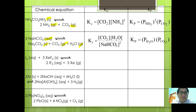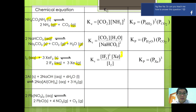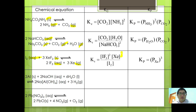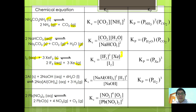For I2(aq) + 3H2(g) ⇌ 2HI(aq) + 3Z(g) (approximately), Kc = [HI]² · [Z]³ over [I2], whereas Kp is only the partial pressure of Z cubed. For 2Al + 2NaOH + 6H2O → 2NaAl(OH)4 + 3H2, Kc = [NaAl(OH)4]² · [H2]³ over [NaOH]², while Kp = P_H2³. For the final example, Kc = [NO2]⁴ · [O2] over [Pb(NO3)2]², and Kp = P_NO2⁴ · P_O2.